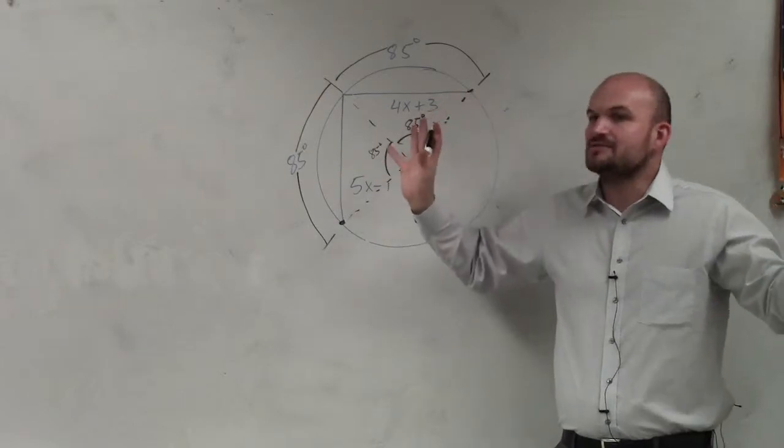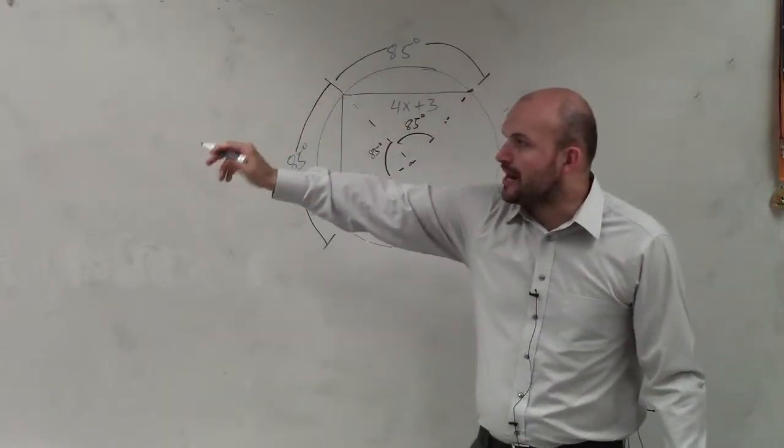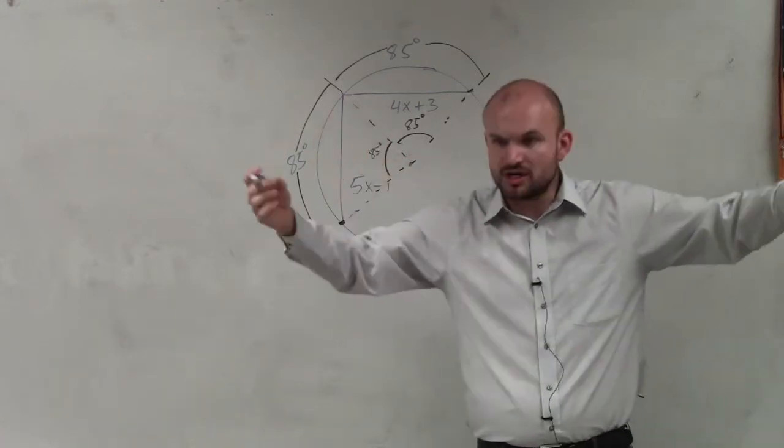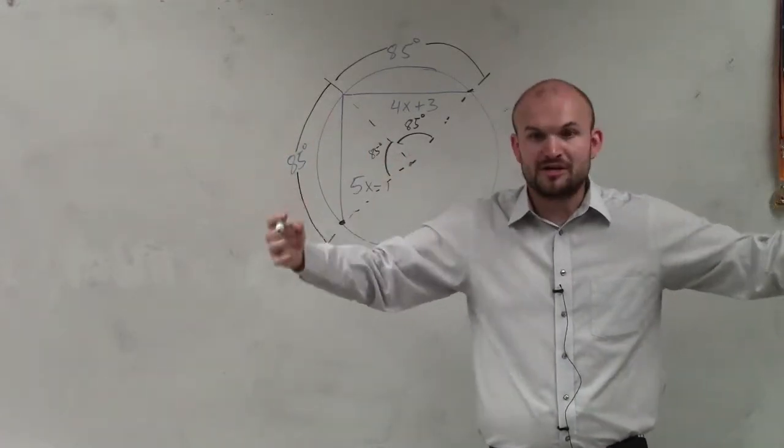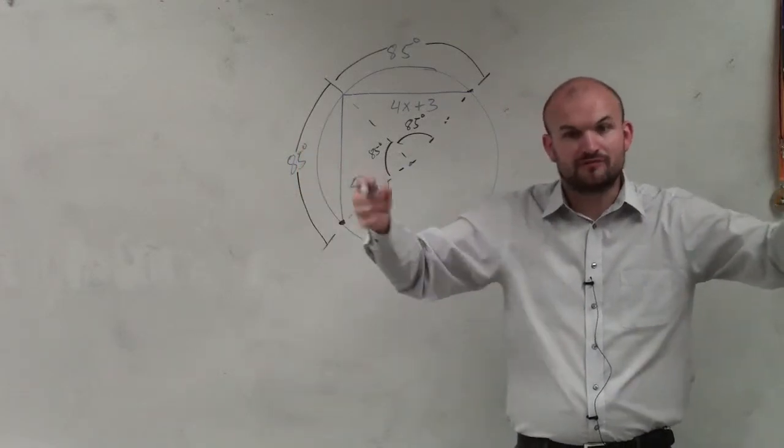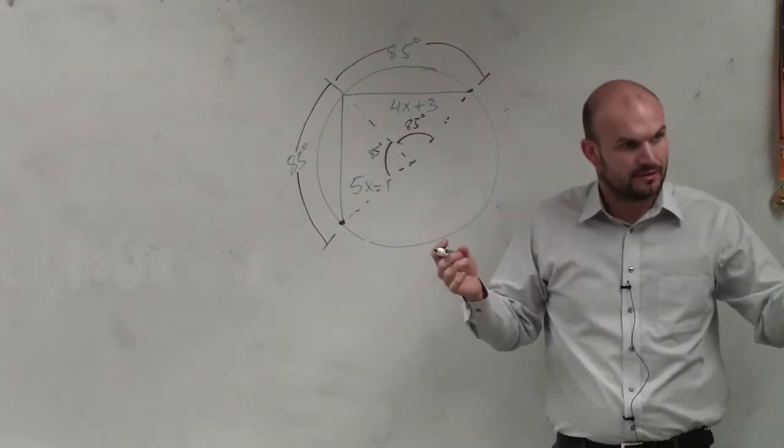But anyways, regardless of that, it doesn't really matter. We talked about if cords are the same length, then the measure of their arcs is the same length, correct? So if the measure of the arcs are the same length, can we then reason that the measure of the cords are the same length? Yes.